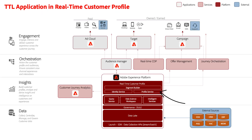In this architecture diagram — an AEP architecture — under the real-time customer profile you can see the arrow mark pointing to the profile services section. Once we implement the Time to Live feature it impacts only that section inside AEP. The data inside the data lake, shown at the bottom of the red box, is not impacted. All data will remain in the data lake for reporting, while it will be removed from the profile store for personalization activities.